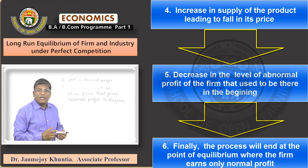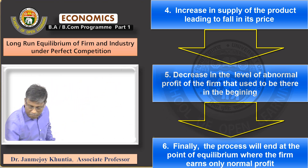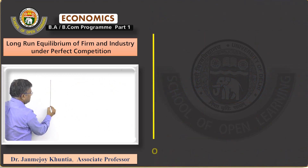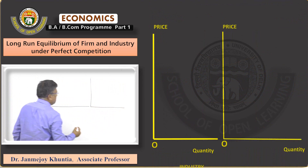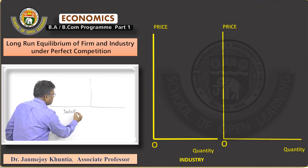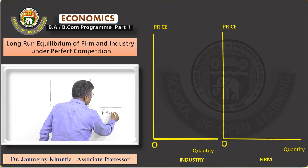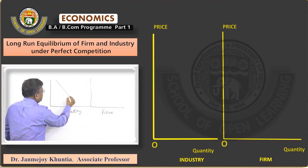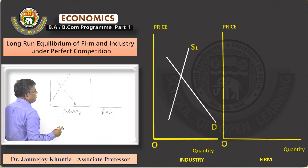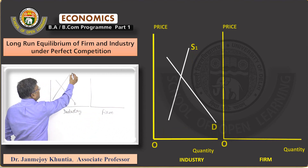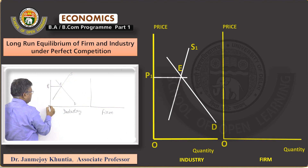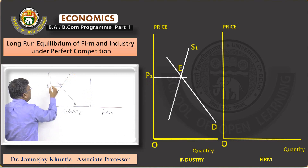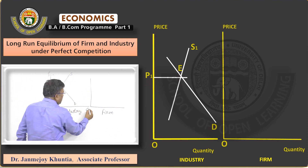We can now come to the diagram. The left-hand side is for the industry and the right-hand side is for a firm. Starting with the industry diagram: the demand curve of the industry is downward sloping, the supply curve of the industry is upward sloping, and equilibrium between demand and supply is at point E, so the initial price is P1. Price is on the vertical axis and quantity is on the horizontal axis.